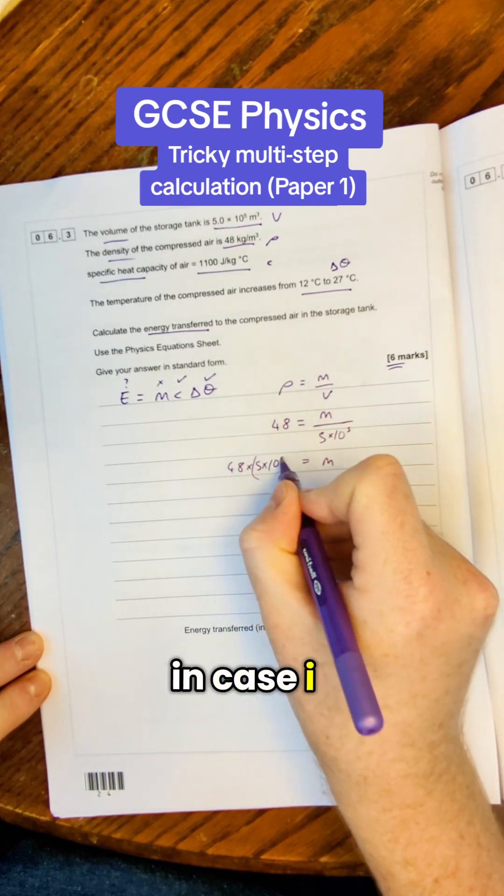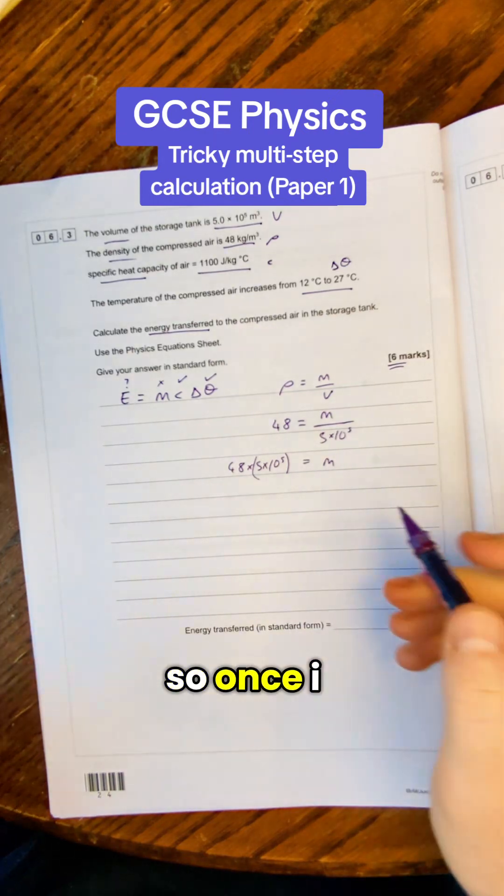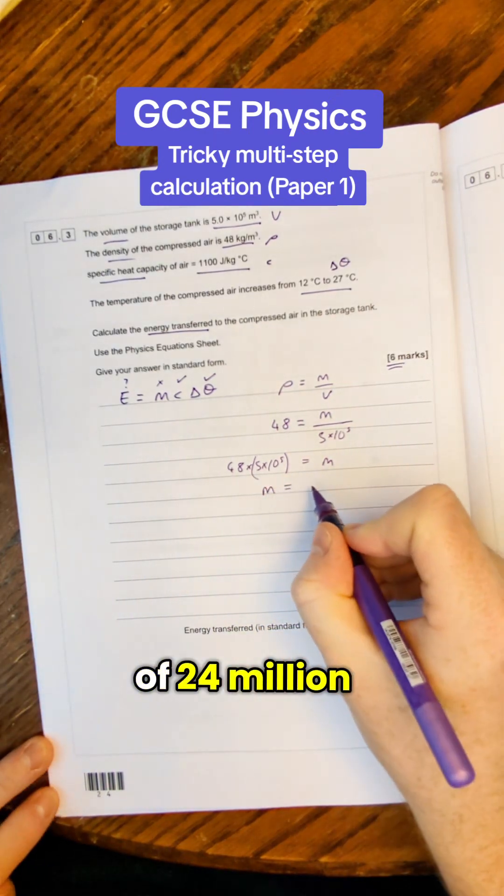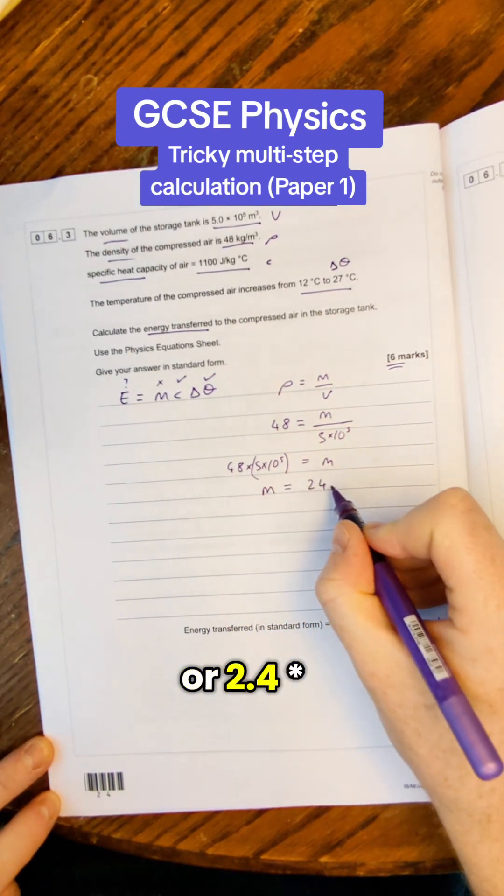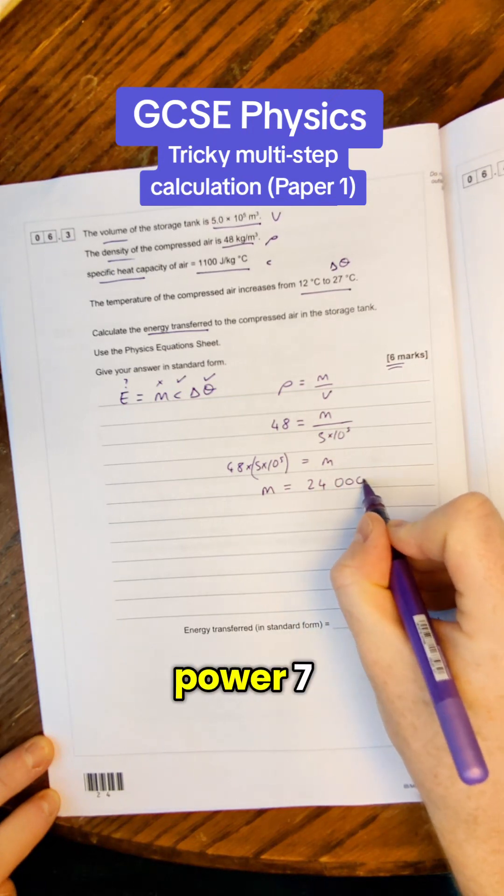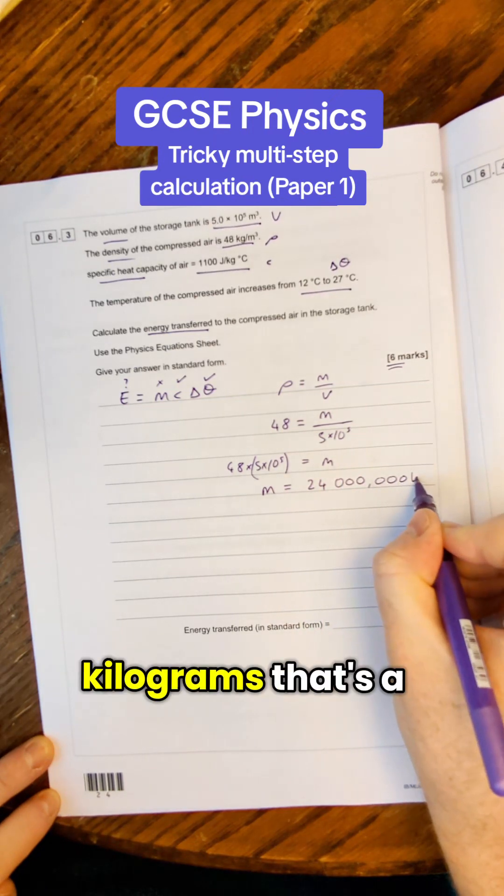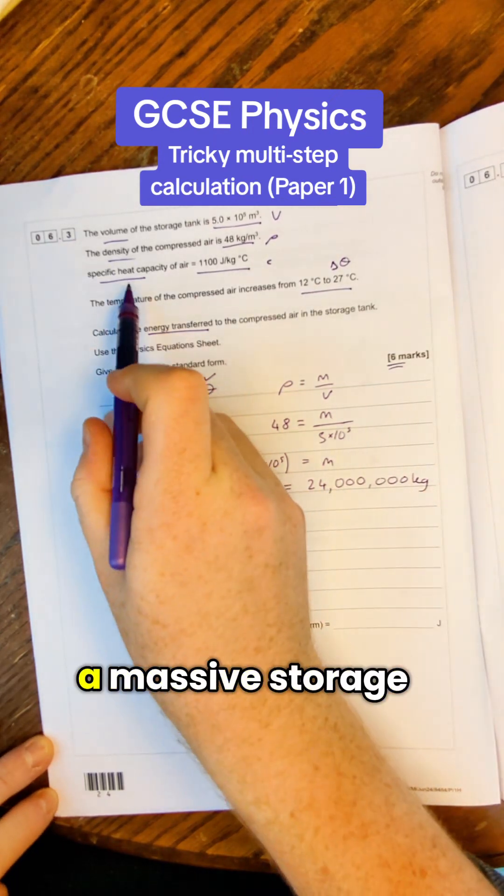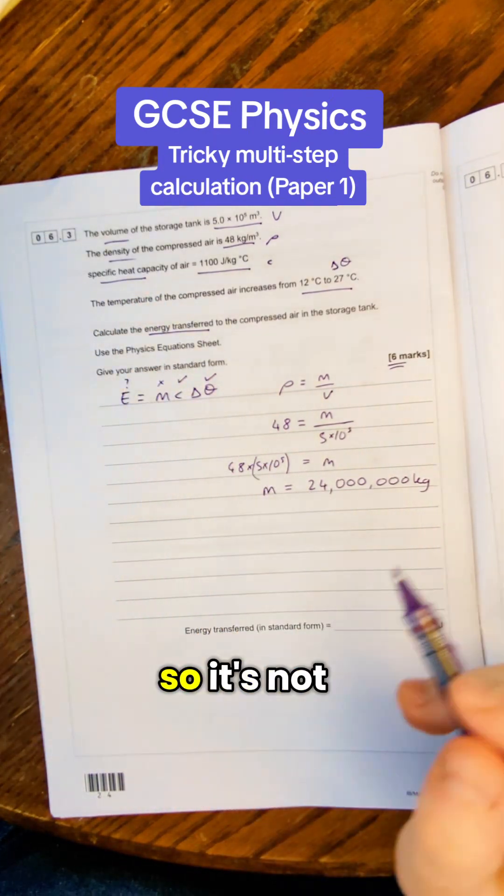So once I do that I get a mass of 24 million or 2.4 times 10 to the power 7. That's in kilograms. That's a really high number however it is a massive storage tank in this question so it's not too crazy.